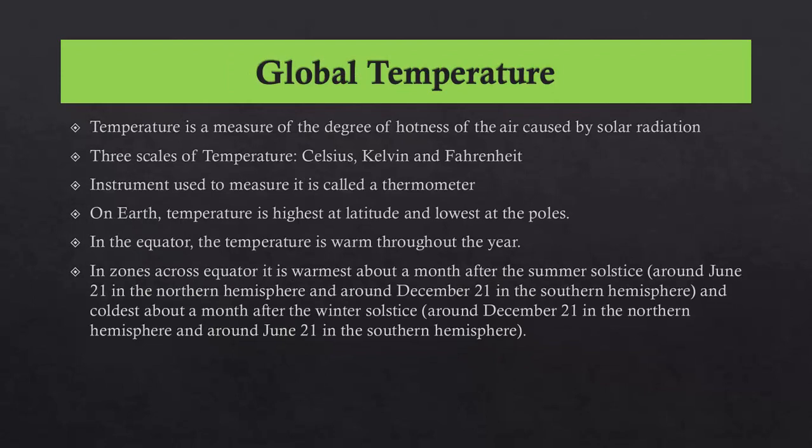The second variable is temperature. Temperature is a measure of the degree of hotness of the air caused by solar radiation. The sun is the ultimate factor responsible for weather. The rays are absorbed differently by land and water surfaces. There are three scales of temperature: Celsius, Kelvin, and Fahrenheit. The instrument used to measure temperature is called a thermometer. On earth, temperature is highest at the equator and lowest at the poles.